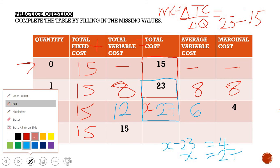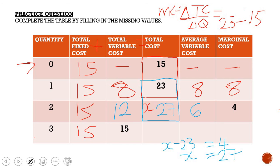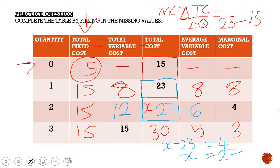At quantity 3, total fixed cost and total variable cost are given. Total cost equals 15 + 15 = 30. Average variable cost equals 15 ÷ 3 = 5. Marginal cost equals (30 − 27) ÷ (3 − 2) = 3. When doing a question like this: write down your formula, fill in what you have, and solve for the unknown. Always fill in total fixed cost first — if the first value is given, all rows are the same — then work out total variable cost or total cost from any two of the three values. I hope this video helped you. Thank you.